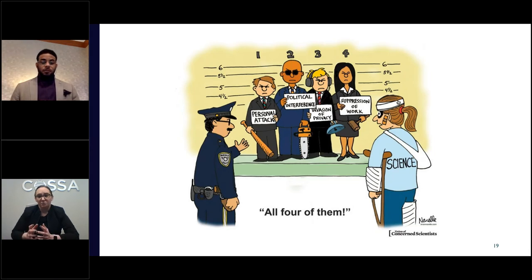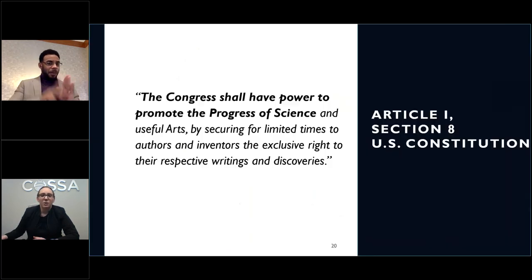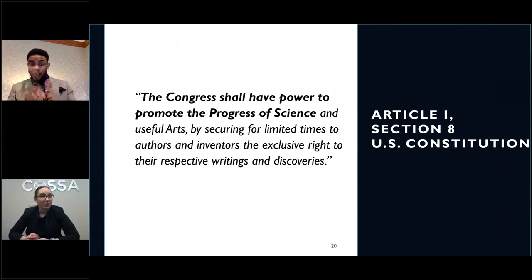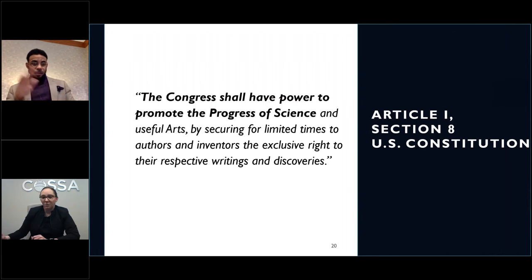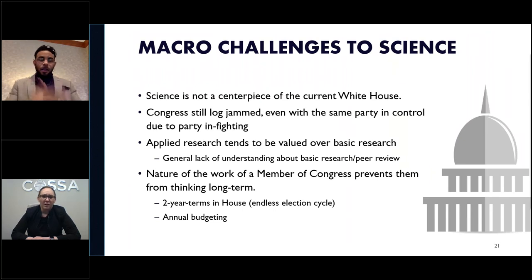It's probably not a surprise to hear that science, especially social and behavioral science, has had a checkered past when it comes to support from policymakers. But it's important to remember that at our country's founding, scientific research was seen as a fundamental function of government. Article I of the Constitution states that Congress shall have power to promote the progress of science — a passage often overlooked when people invoke the Constitution, but it establishes that federally supported research was a foundational government function.